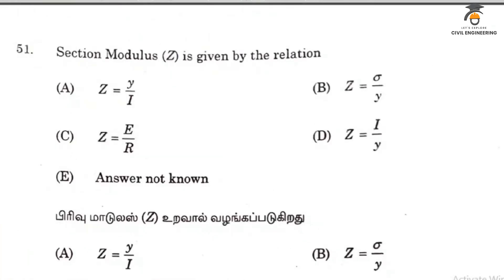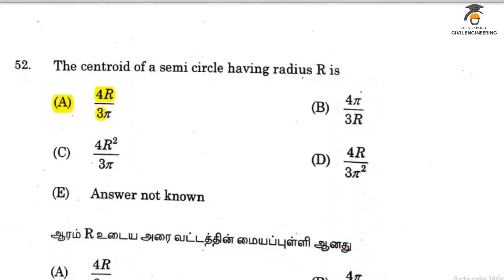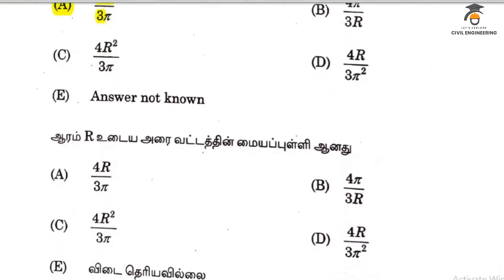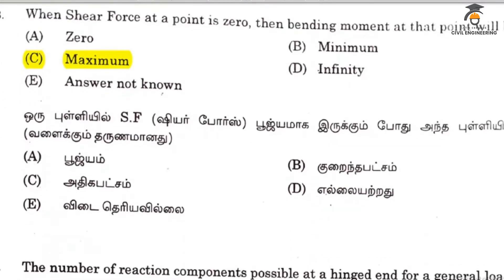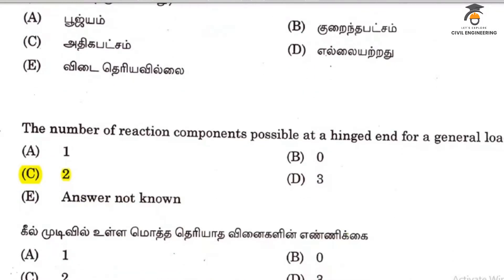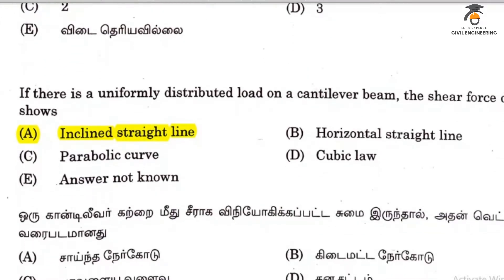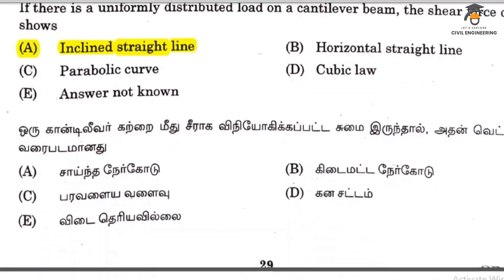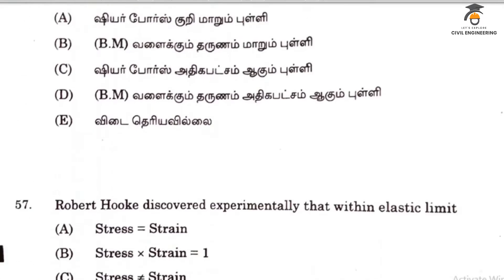Section modulus is given by the relation Z equal to I by Y. The centroid of a semicircle is 4r by 3π. Shear force is 0 at the point of maximum bending moment. The number of reaction components possible at a hinge for general loading is 2. If there is a uniformly distributed load on a cantilever beam, the inclined shear force applies. The point of contraflexure is where the bending moment changes sign.